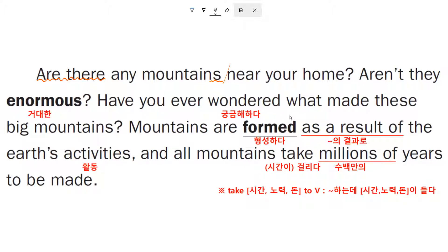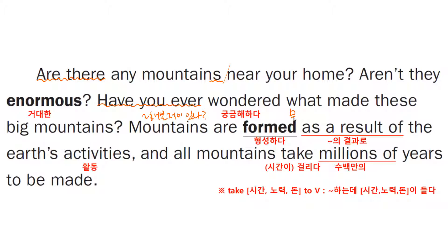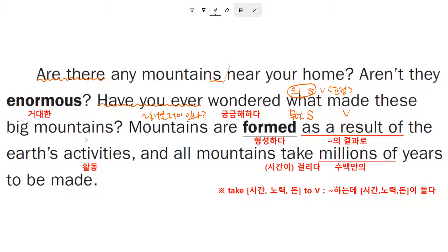Have you ever wondered what made these big mountains? — 자, 'have you ever' 이런 표현, 뭐뭐 해본 적이 있느냐. 'Have you ever wondered' — 궁금해 해본 적이 있느냐, 과거부터 지금까지. 'What made these big mountains?' — 무엇이 이 거대한 산들을 만들었는지. 'What'은 의문사이기도 하지만 주어로도 쓰였죠. 이것을 간접 의문문, 의주동이라고 표현하는데, 'what'이 의문사와 주어를 동시에 역할을 합니다.